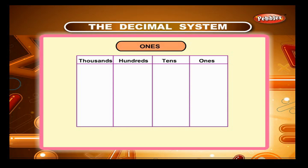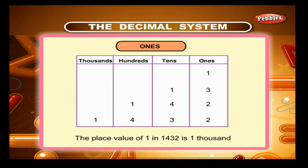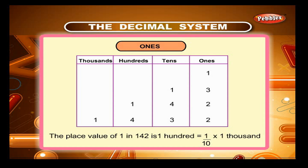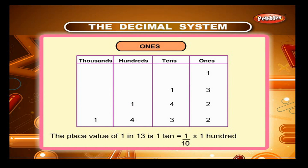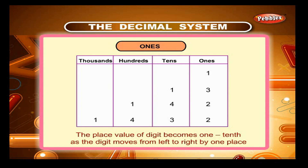What happens to the place value of a digit as it moves one step from left to right? The place value of 1 in 1432 is 1000. The place value of 1 in 142 is 100, which is equal to 1/10 into 1000. The place value of 1 in 13 is 10, which is equal to 1/10 into 100. Thus, the place value of a digit becomes 1 tenth as the digit moves from left to right by one place.